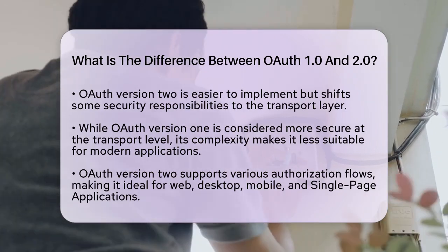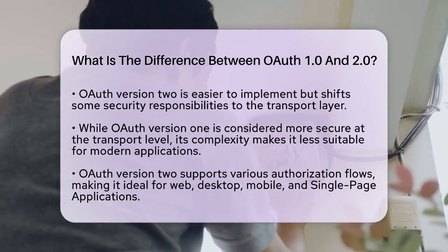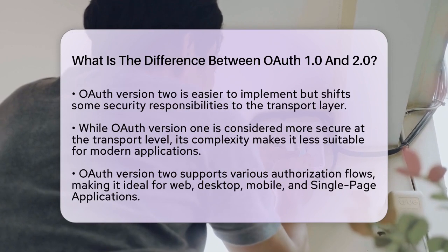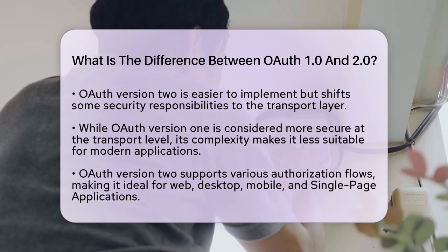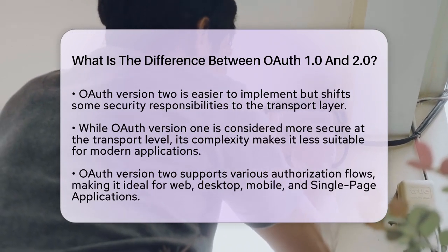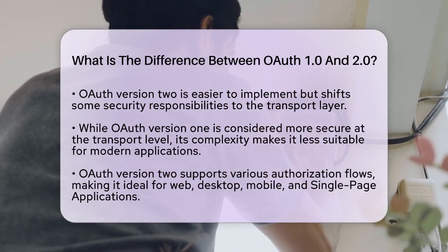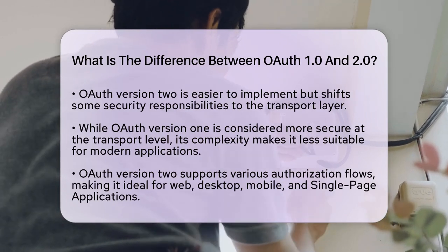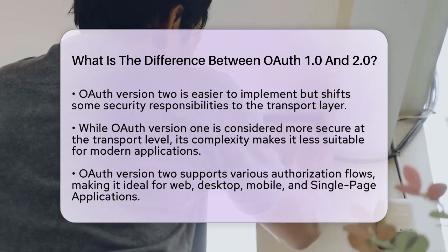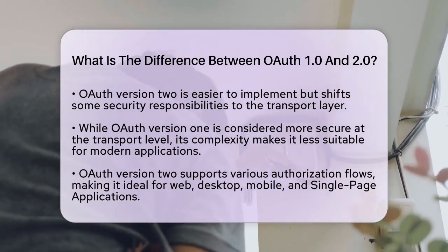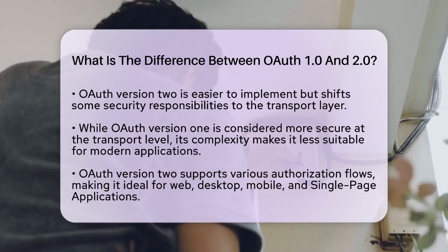OAuth Version 2 also supports multiple token types, such as access tokens, refresh tokens, and identity tokens through OpenID Connect. This flexibility enhances its usability across different platforms.